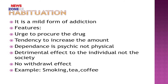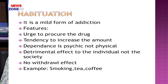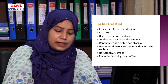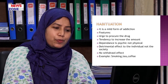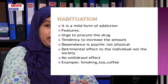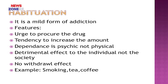Now, habituation. Habituation is a mild form of addiction — like drinking tea or coffee as a habit. The features are: there is an urge to obtain the drug, but not as strong as in dependence. There is a tendency to increase the drug. Dependency is only psychic, not physical — there is no physical problem when not taking the drug. There is a detrimental effect to the person but not to society. There is no withdrawal syndrome. Examples are smoking, tea, and coffee.